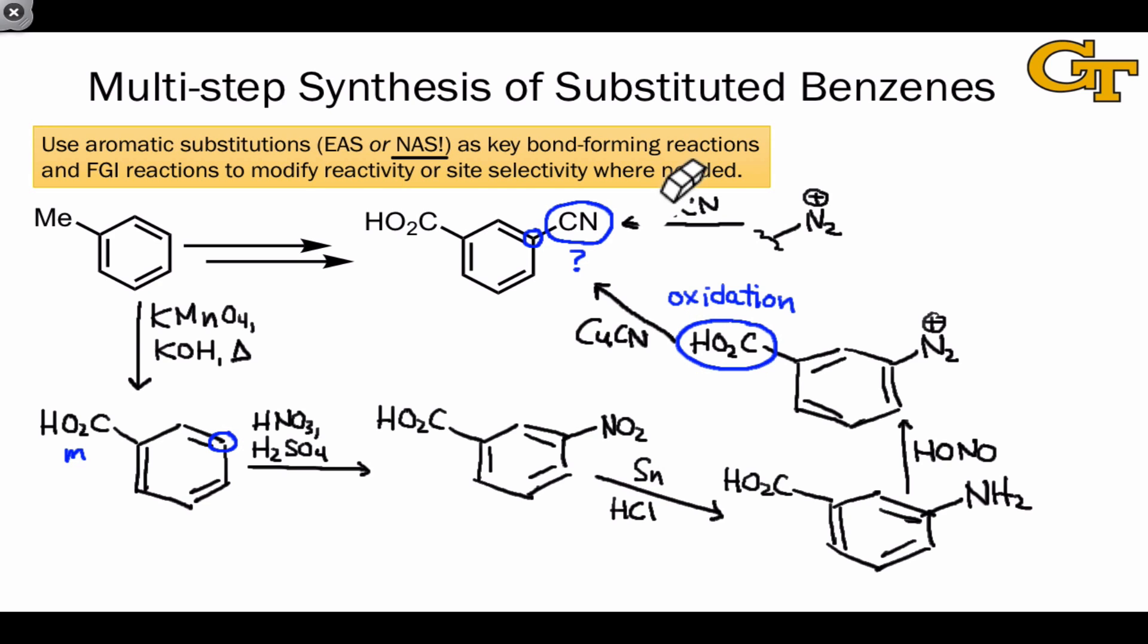So if I clear away some of the extra things we drew here, the overall synthetic sequence here shows us that oxidation of the methyl group to a carboxylic acid was key. This installed a meta-director that allows us to install ultimately a diazonium group meta to the carboxylic acid, which could be substituted with the cyano group through a nucleophilic aromatic substitution reaction.